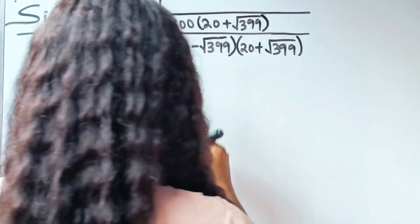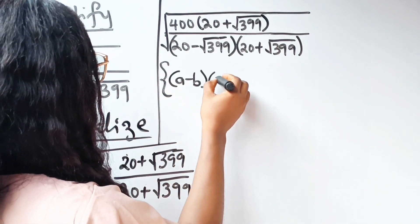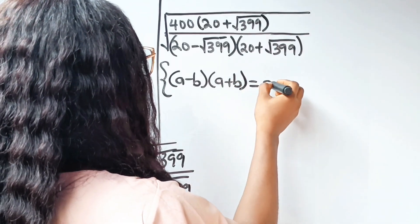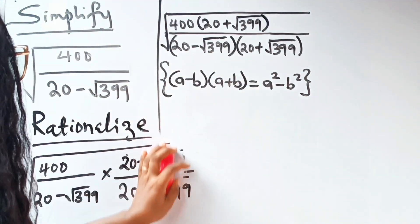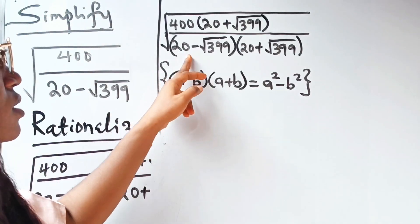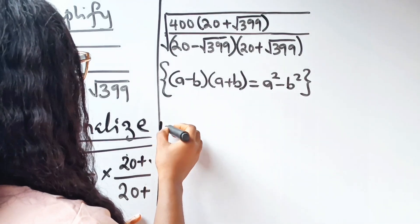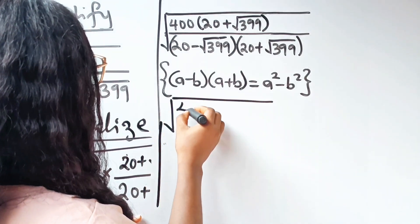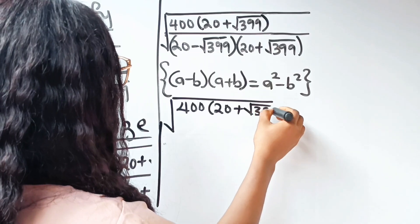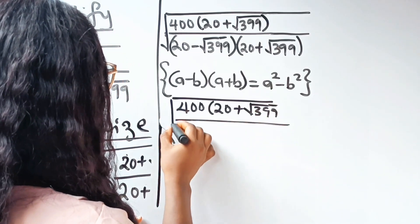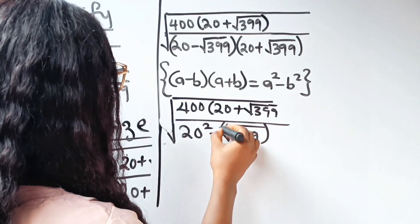Recall that (A minus B) multiplied by (A plus B) is equal to A squared minus B squared. In this case, our A is 20 and our B is root 399. So we are going to have square root of 400 times (20 plus root 399), divided by 20 squared minus (square root of 399) squared.